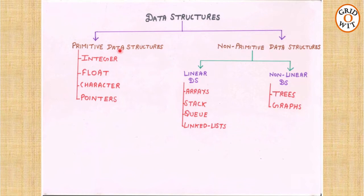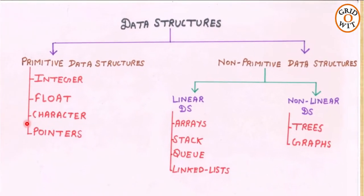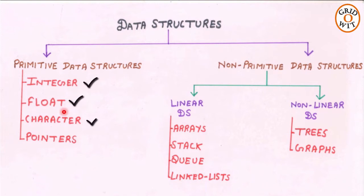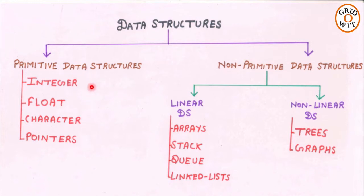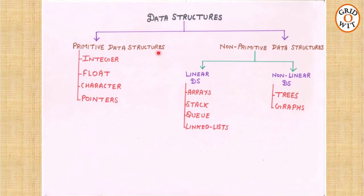Primitive data structures always concern with primitive data types like integer, float, character, pointers, etc. These are basic data structures and are directly operated upon by machine instructions. Primitive data structures are also known as inbuilt data structures.